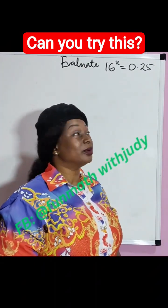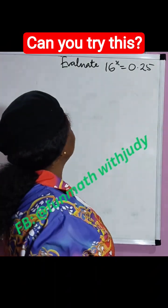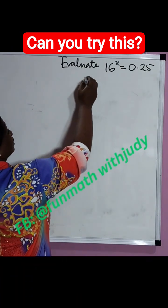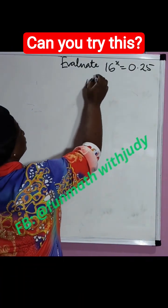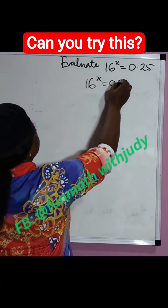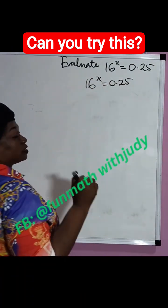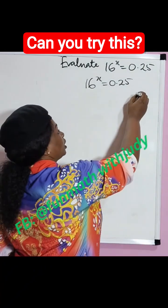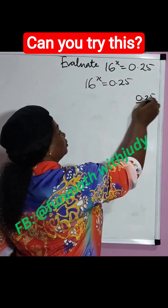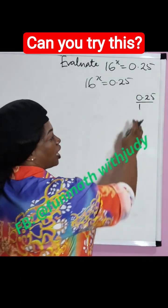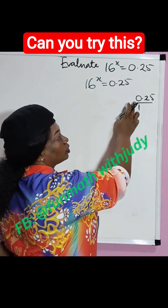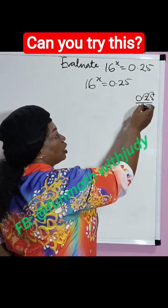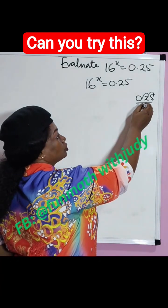The question we have on the board is 16 raised to power x equals 0.25. Now let's convert 0.25 to a fraction: we have 0.25 over 1. Now let's move the decimal — add 2 zeros.